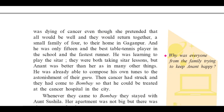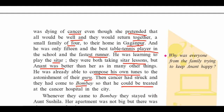Her brother was dying of cancer, even though she pretended that all would be well and they would return together as a small family of four to their home in Gaganpur. He was only 15 — the best table tennis player in the school and the fastest runner. He was learning to play the sitar. They were both taking sitar lessons, but Anant was better.